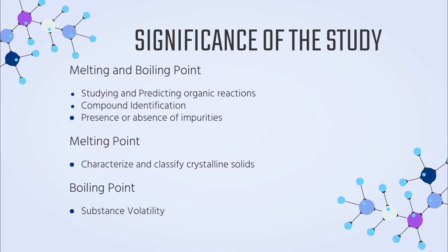The determination of boiling point and melting point of an organic compound is an integral part of organic chemistry, as both are important physical properties. These properties are key factors in studying and predicting organic reactions, and can be used in identifying compounds and indicating the presence or absence of impurities. The smaller the boiling point or melting point range, the more pure the compound. The melting point helps indicate the energy required to break crystal lattices in solids, while boiling point indicates the volatility of a substance, important for storage, transport, and safety precautions in laboratories and factories.